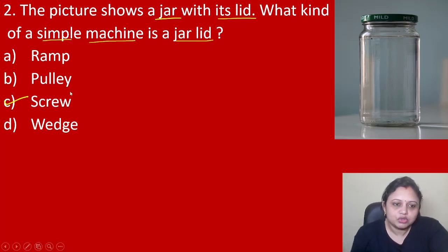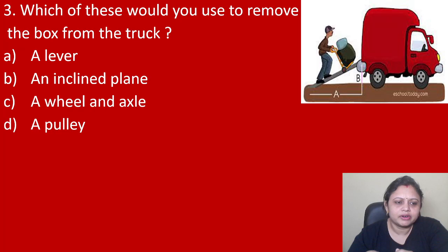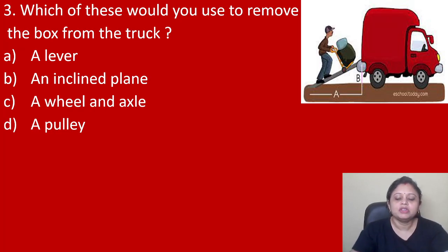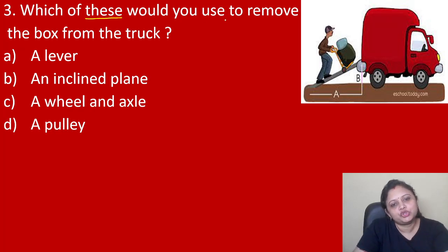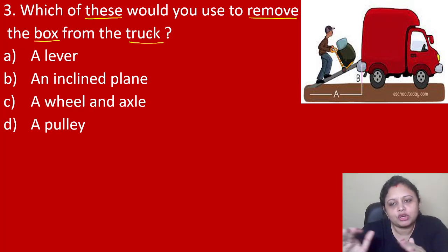Coming to the next question: which of these would you use to remove a box from the truck? Option A lever, B an inclined plane, C a wheel and axle, D a pulley. So we have to remove a heavy box from the truck. What will we do? It is not easy for us to carry it directly — it will be heavy.